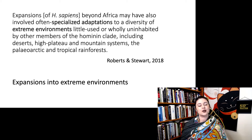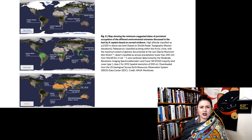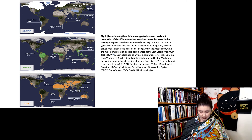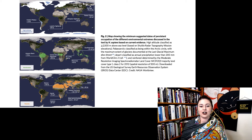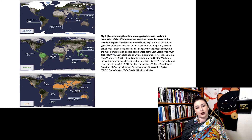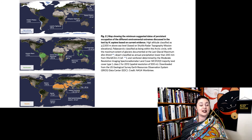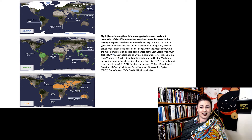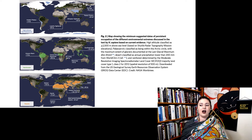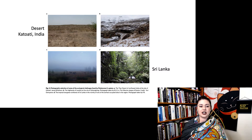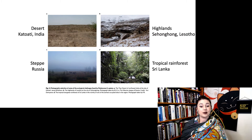Hominin means everything more closely related to us than to chimpanzees. Let's look at some of the different environments they're calling extreme. One extreme is very high altitude and cold — we deal with cold using clothes. Also rainforests, which tend to be fairly difficult for humans to survive in. Also deserts — humans are super sweaty creatures and it is relatively difficult for us to survive there because we need relatively easy access to water. Here we have examples: a desert in India, the highlands of Lesotho, the Russian steppe, and a tropical rainforest in Sri Lanka — all places people inhabit today.